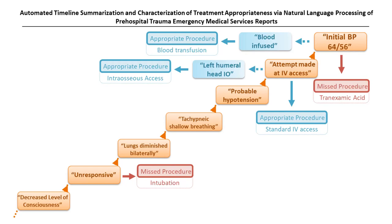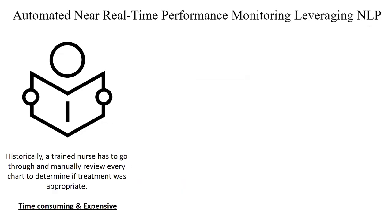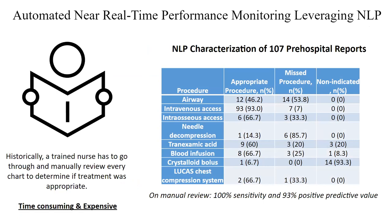TXA came out of the CRASH-2 trial published in 2010. This is from 2017–2018 — seven or eight years later — a very well-known international trial, and the standard of care still wasn't being followed. This automated NLP pipeline allows us to do within minutes what used to be a manual process. We can now, within minutes of a note being done, run it through the NLP pipeline and determine whether someone got appropriate treatments, an error of omission, or an error of commission. We validated this at Fairview Health and Linus Health systems.